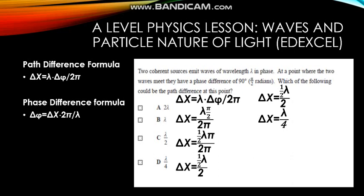Since the two coherent sources emit waves of wavelength lambda, we substitute in lambda and keep it as it is. We multiply lambda by the phase difference, which is π/2 radians, so it's lambda times π/2 divided all by 2π. Factoring out the half gives us half lambda times π, divided by 2π. There's a common factor of π on both top and bottom, so they cancel out. We end up with half lambda divided by 2, which simplifies to 0.5 divided by 2, giving 0.25 — that is one quarter. So the path difference is a quarter lambda.